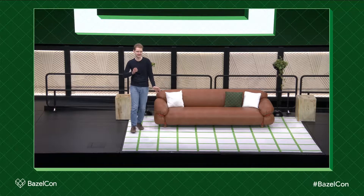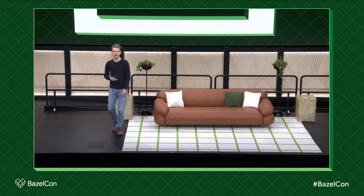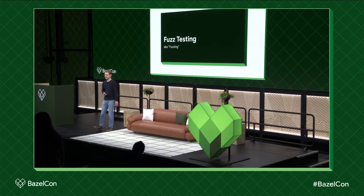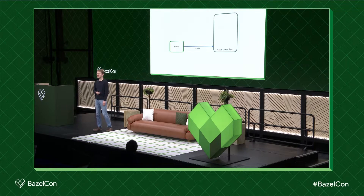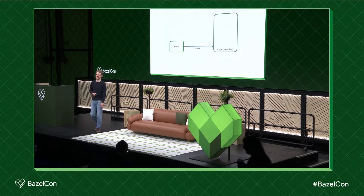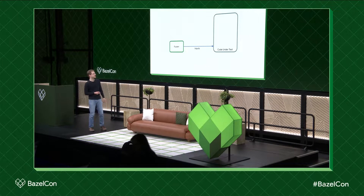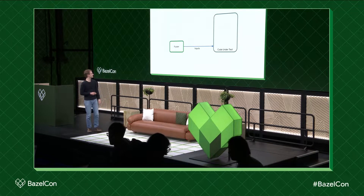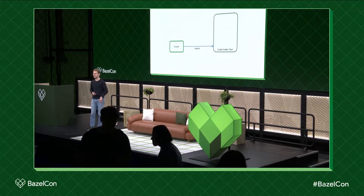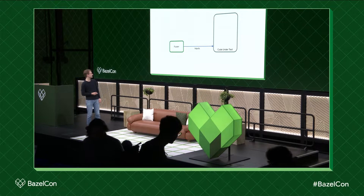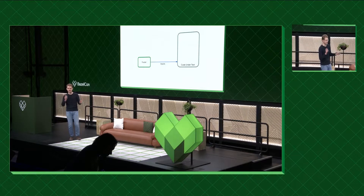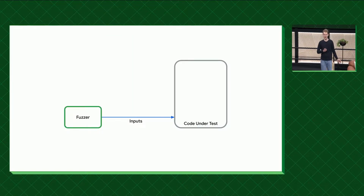We like to call it fuzz testing to show that it's really part of your testing infrastructure and testing workflow, but it's also just colloquially known as fuzzing. The general idea is very simple and started out in the 1980s with some Unix tools. You have some code to test and you have a fuzzer, which is nothing but a program that feeds random inputs to your program, code, library, parser, whatever, and tries to make it crash.